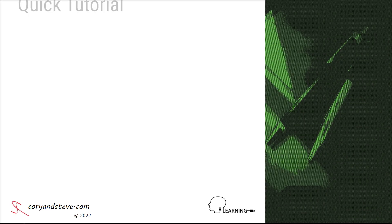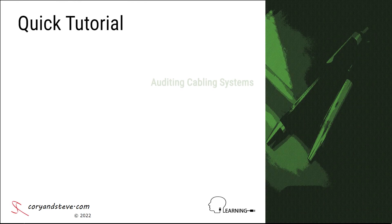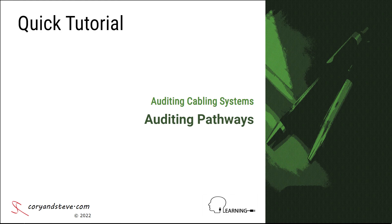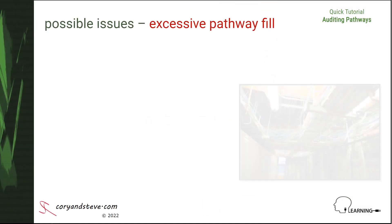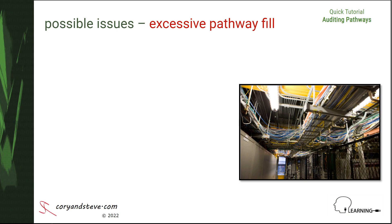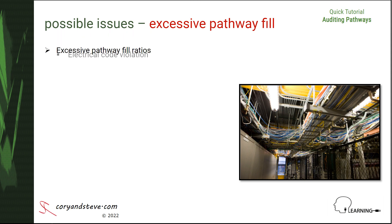Hello, this quick tutorial covers things to look for when auditing the pathways used by network cabling systems within buildings. When auditing cabling pathways within a building, one of the items to look for is an excessive fill ratio, which may be a jurisdictional code violation in addition to affecting cabling system performance.